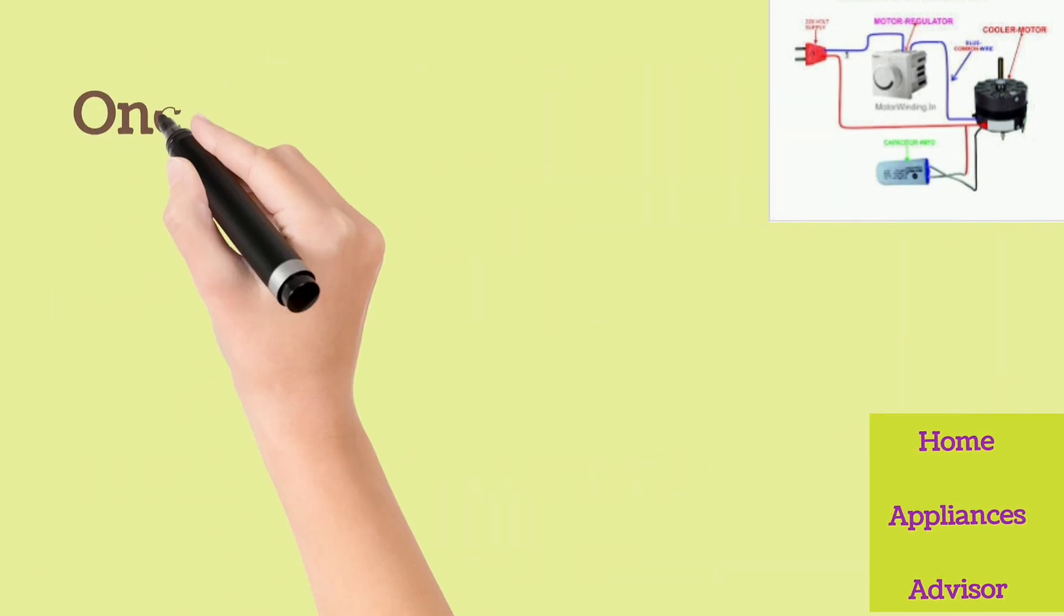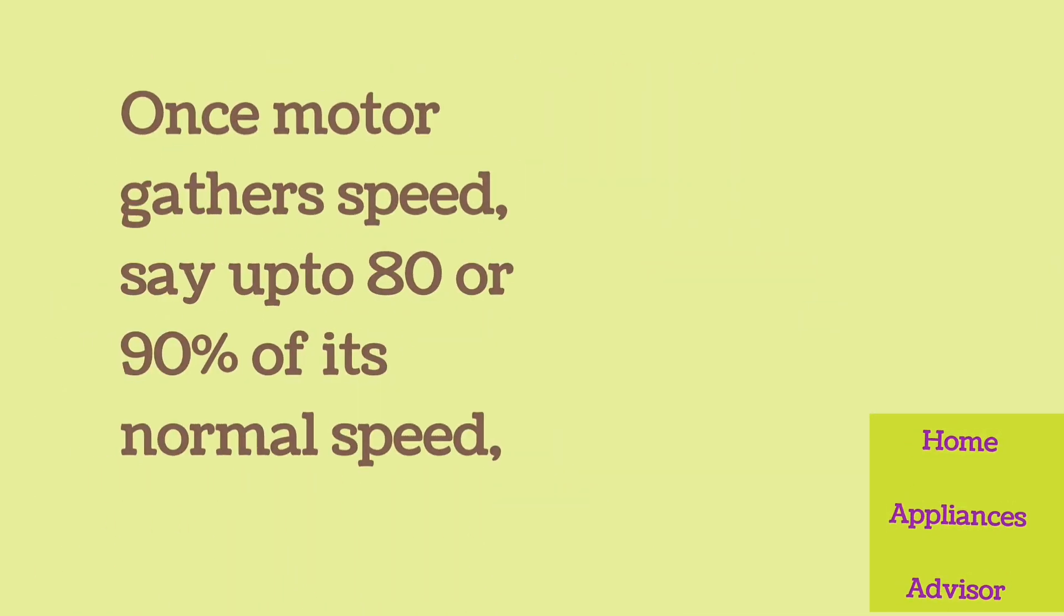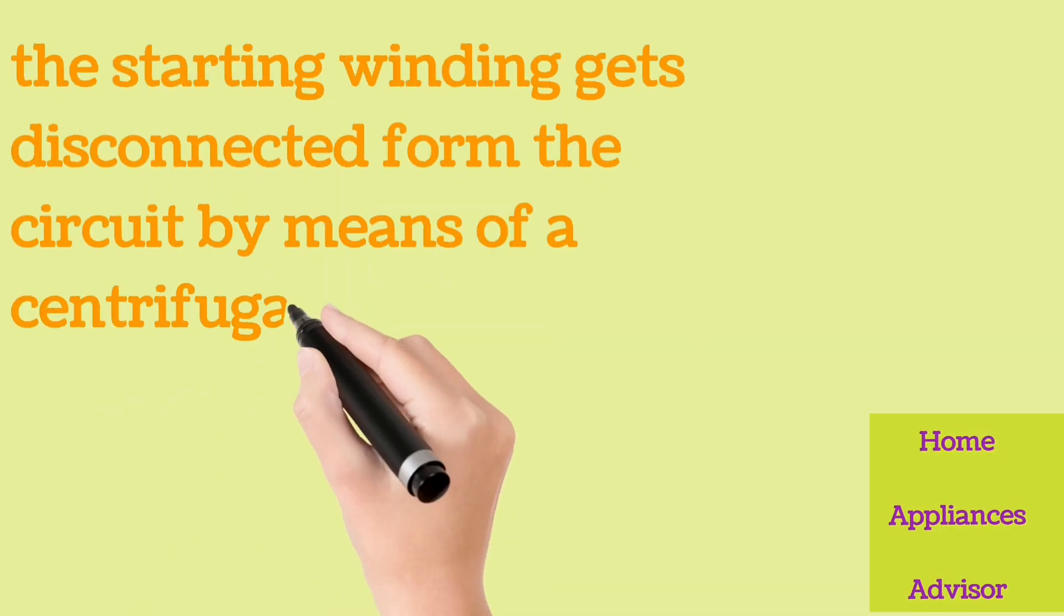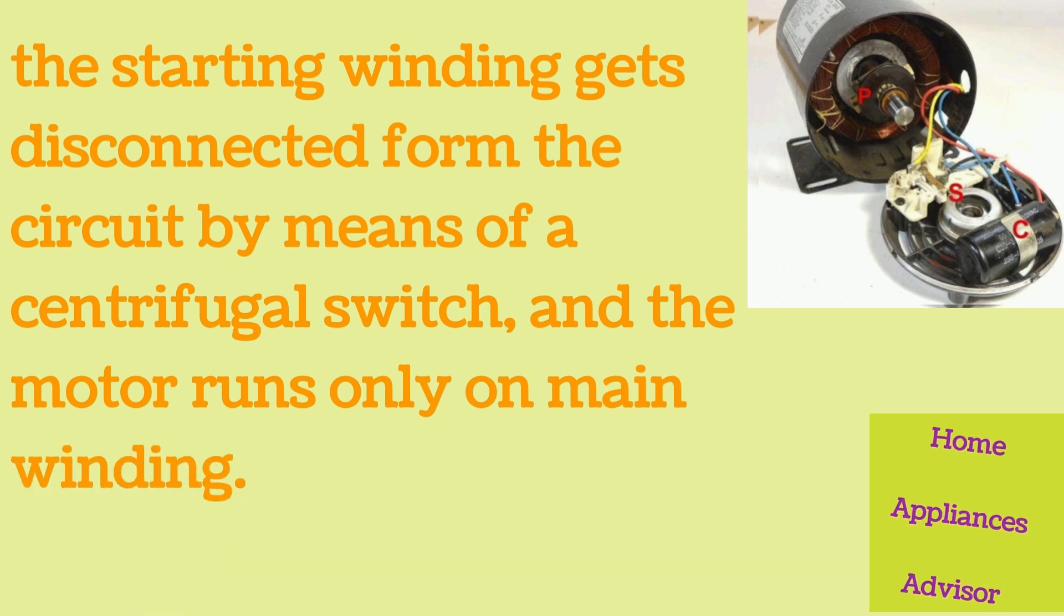Once the motor gathers speed, say up to 80 or 90% of its normal speed, the starting winding gets disconnected from the circuit by means of a centrifugal switch, and the motor runs only on the main winding.